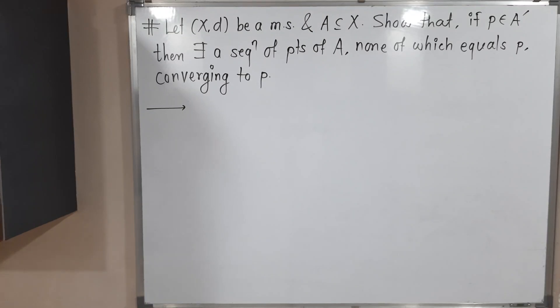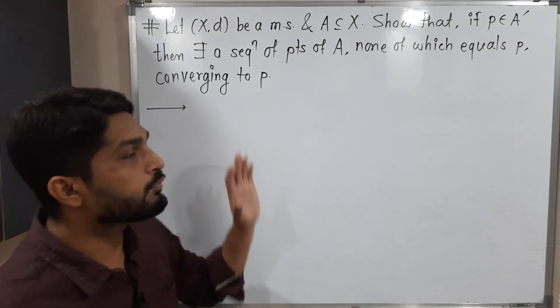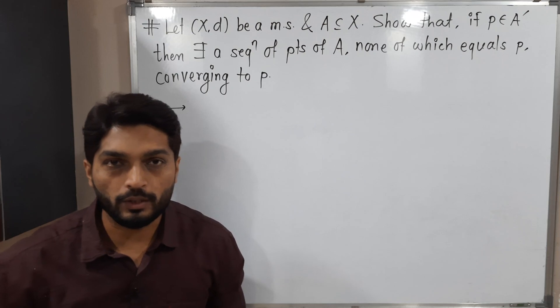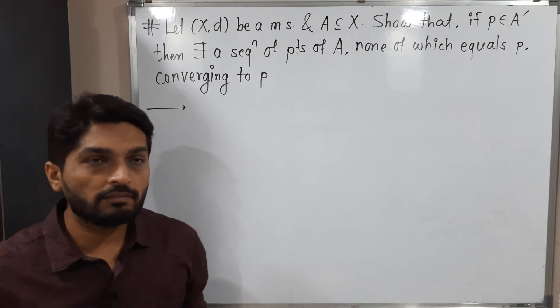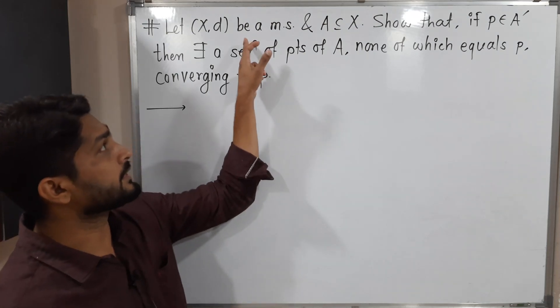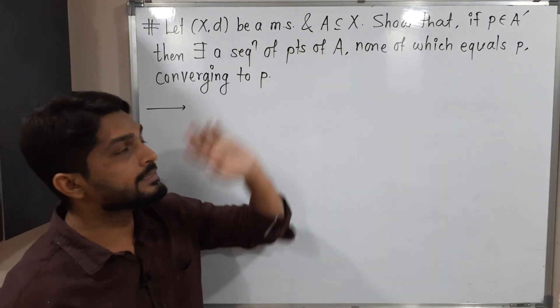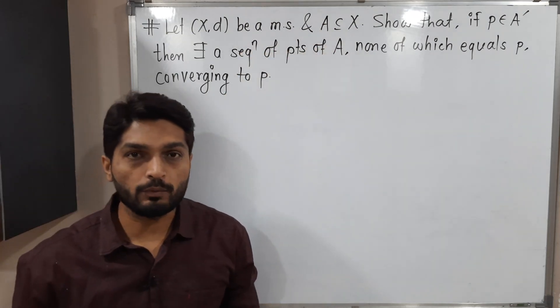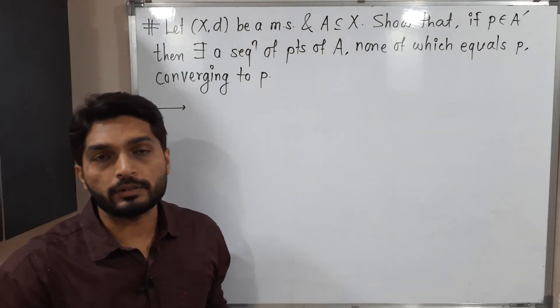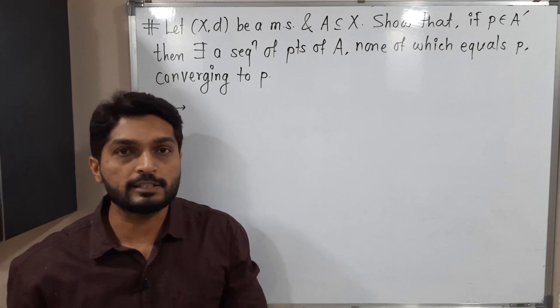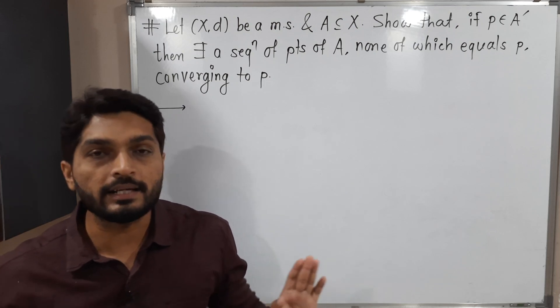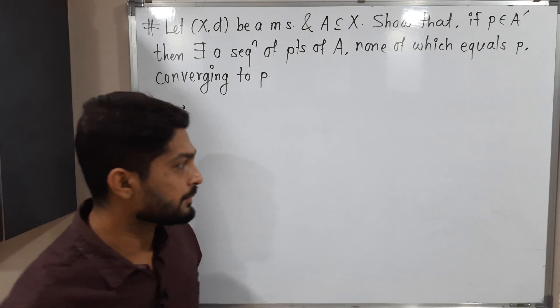Hi, everyone. In this video, we are going to discuss the proof of this theorem. We have a metric space X with metric D, and A is a subset of X. I will draw the diagram simultaneously so we can easily understand the concept.